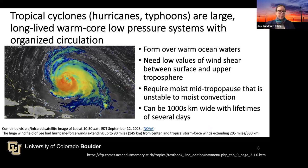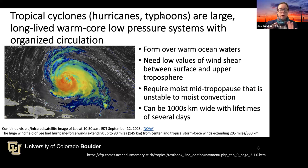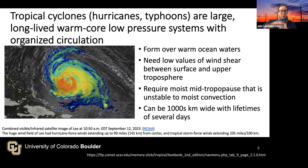A tropical cyclone is the same thing as a hurricane and a typhoon — they are just named differently based on the region of the world. These are very large, organized clusters of thunderstorms with a warm core, a low-pressure system, and very organized circulation. They tend to form over warm ocean waters; the warmer the water, the more powerful the storm. In the formation stage they need relatively low values of wind shear between the surface and the upper troposphere, as well as a lot of moisture.